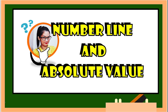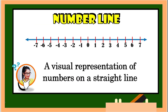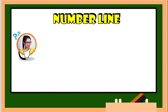This lesson is about number line and absolute value. Let us start by defining what a number line is. A number line is a visual representation of numbers on a straight line. As you observe, we have here a horizontal line, and on both ends of it we have an arrow, which means we can still extend the line.